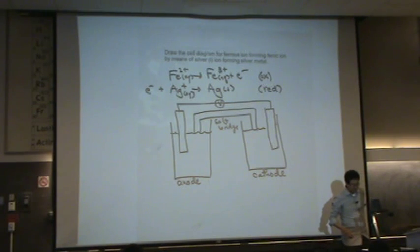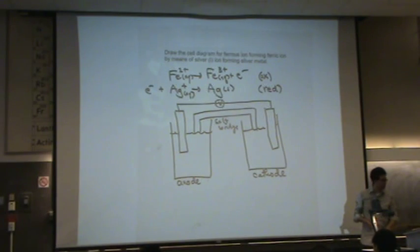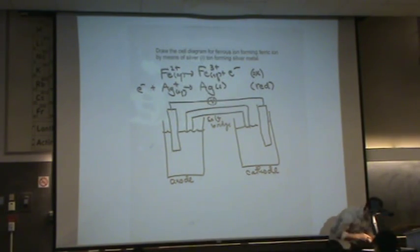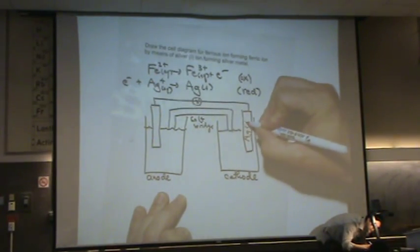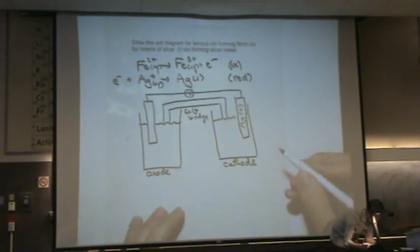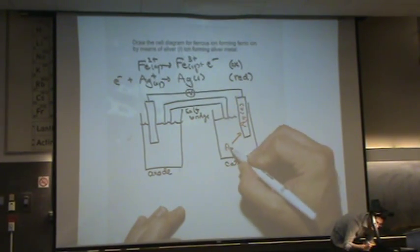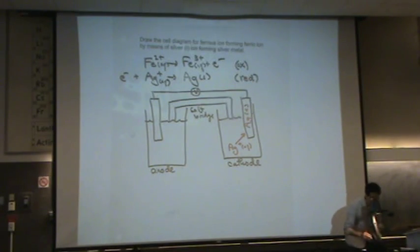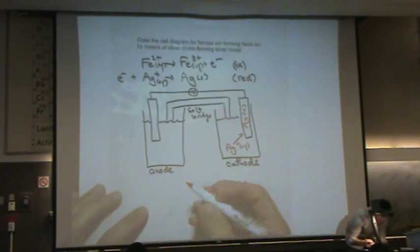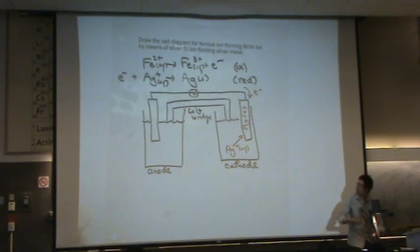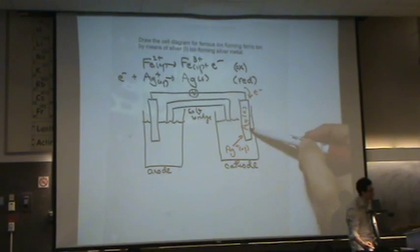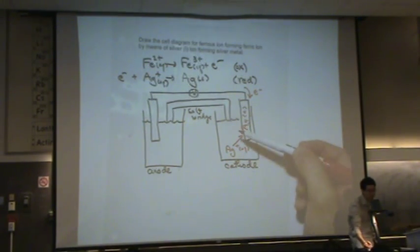All right. Let's do the cathode side first. That's the silver part. So we've got, let me fill in the blanks here. We've got silver solid, and we've got the Ag+ aqueous going to silver solid. And then the electrons are coming in, rounded the bend of that wire coming into the electrode. So Ag+ plus an electron makes, or plates onto, silver solid.